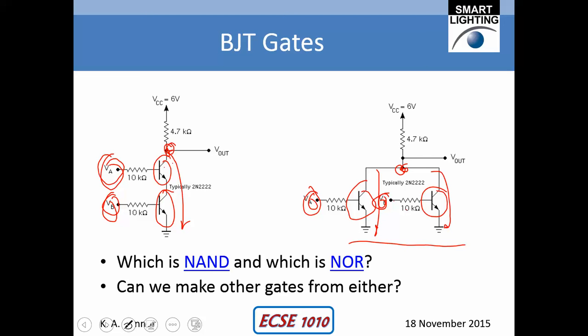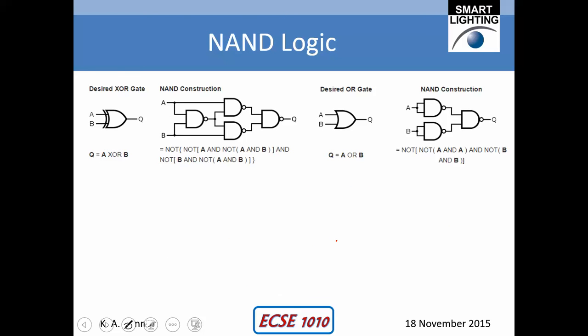Can we make other gates from either of these? If we can make NAND gates out of transistors, and if we can make all other gates out of NAND gates — or all other gates out of NOR gates — then we can make any kind of gate we want. And it turns out: yes, you can make basically any kind of gate out of NANDs or any kind of gate out of NORs. If you look online, you'll find NAND gate logic — just look up the Wikipedia entry. Here is an OR gate and here's how you make an OR gate using NAND gates.